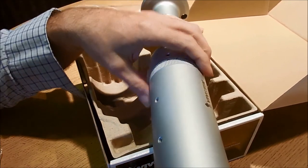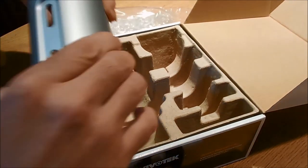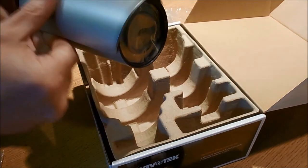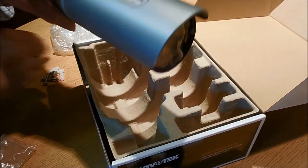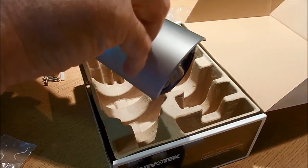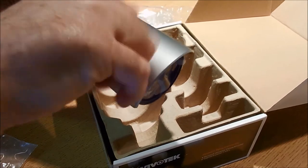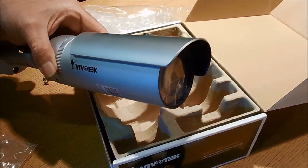You get the bracket, the sunscreen goes on top of the camera like that, and that will go on with just those screws there. So quite simple to put together.